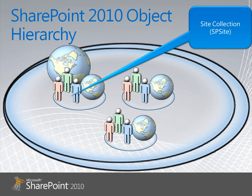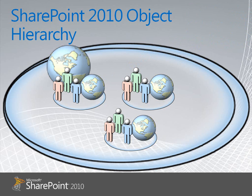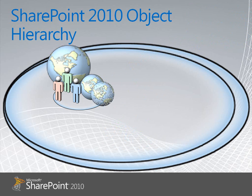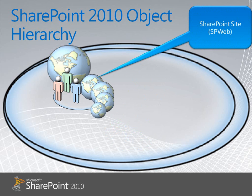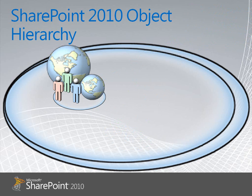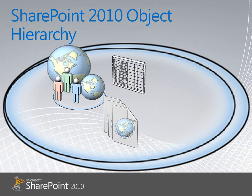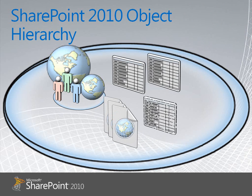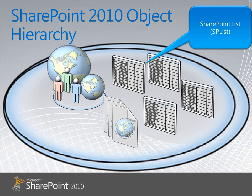An SP site object can contain one or more sites. These really are the sites that we as an end user experience, but in the object model they are called SP web objects. SP webs are really the containers for additional site data such as lists and pages and so forth.